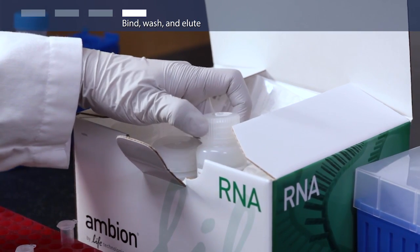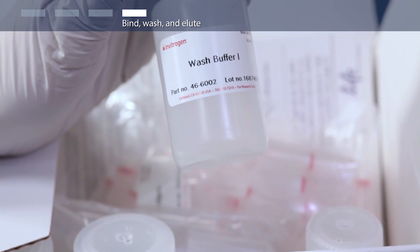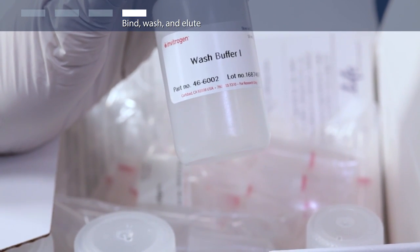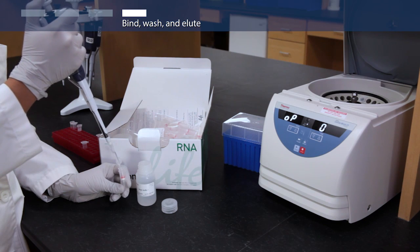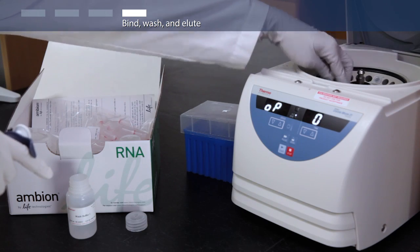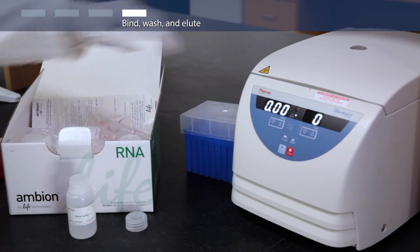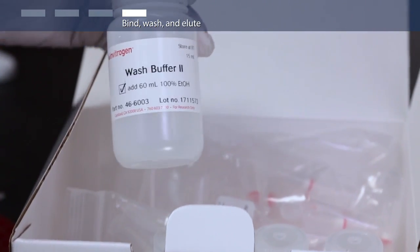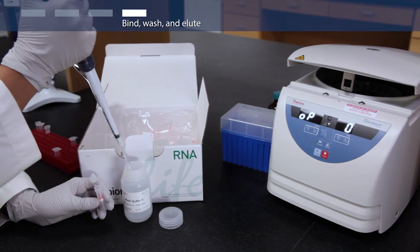Wash your bound RNA by adding 700 microliters of wash buffer 1 and centrifuging at 12,000 g for 15 seconds. Discard the flow-through and the collection tube. With the silica membrane column in a fresh collection tube,